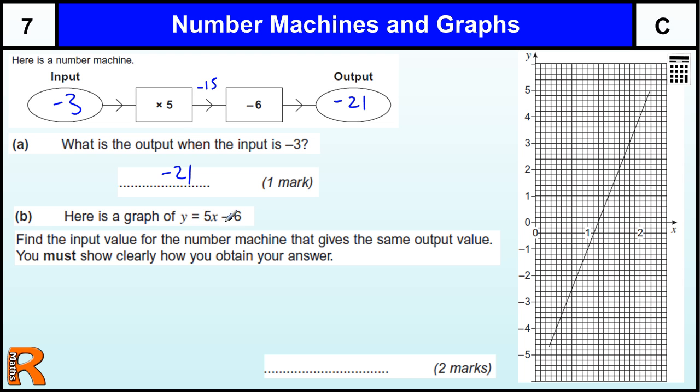Here's a graph of y equals 5x minus 6, just a small part of it. Find the input value for the number machine that gives the same output value.